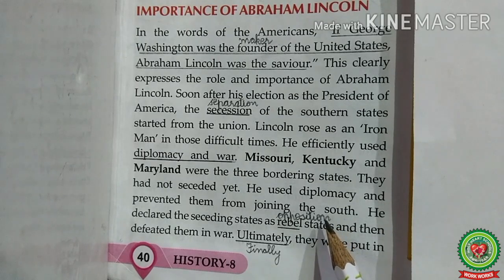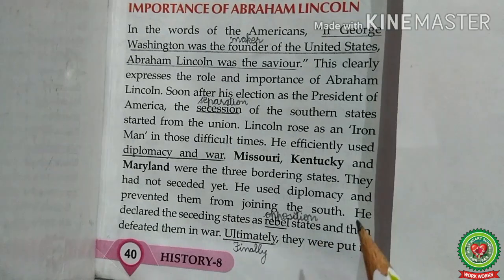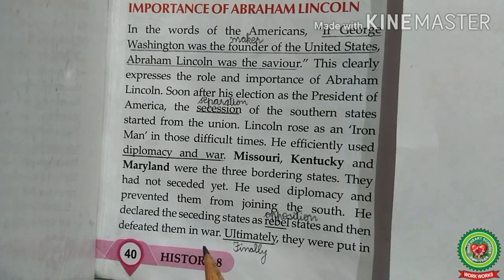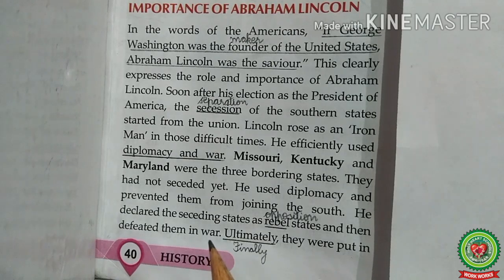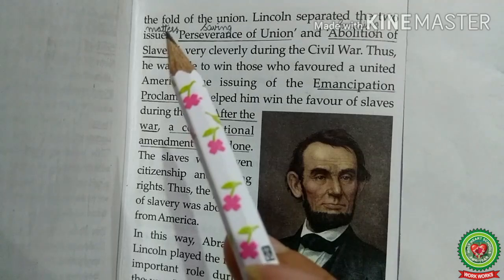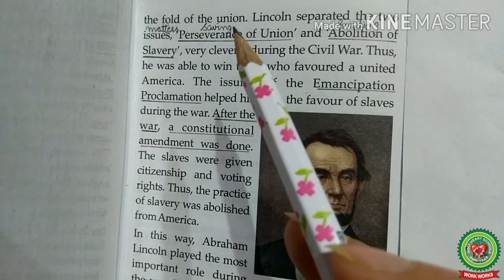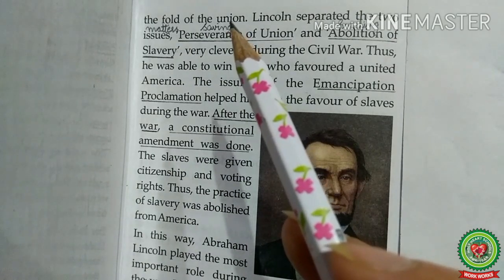Lincoln declared the seceding states as rebel states and then defeated them in war. He declared that the southern states quitting the Union were opposition states. The war was fought between the northern and the southern states — that war was known as the Civil War — and finally the southern states were defeated. Ultimately they were put back in the fold of the Union, as Abraham Lincoln decided to rejoin those states.